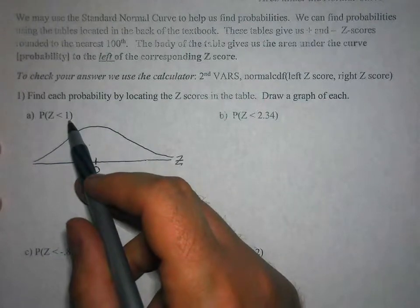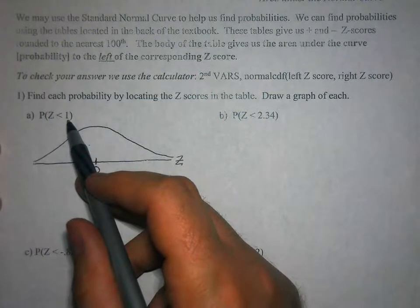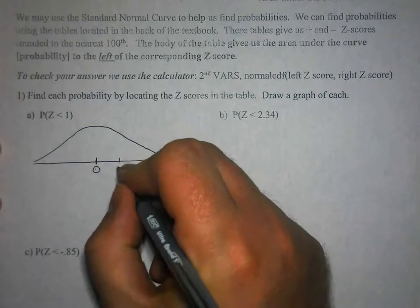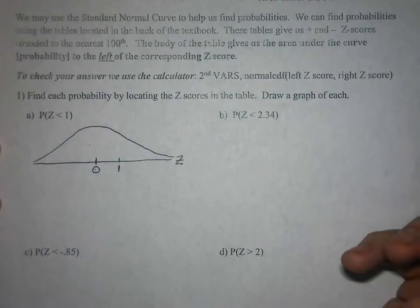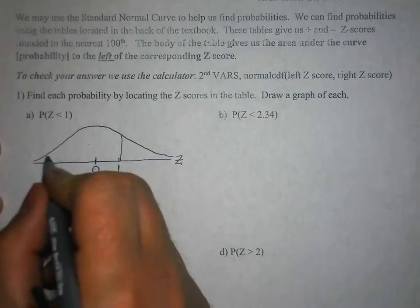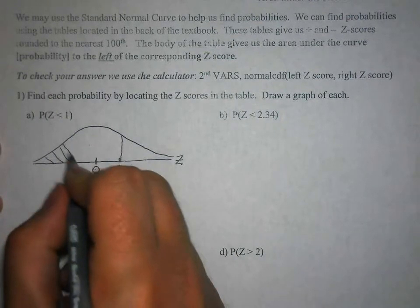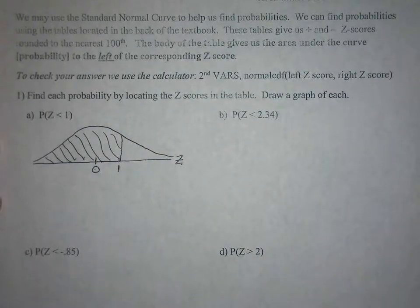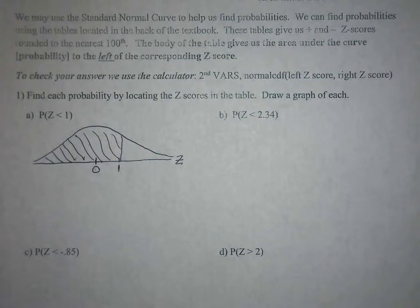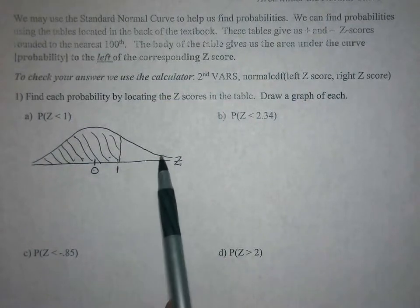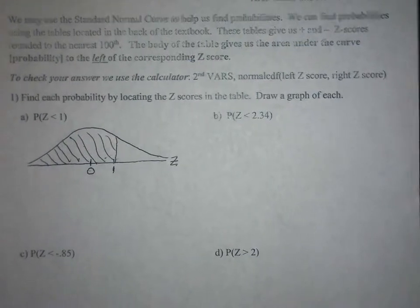Finding the probability that z is less than 1 — we want to know what area, or probability, lies to the left of 1. A z-score of 1 is one standard deviation above the mean. So we shade everything to the left of 1. Remember that 100% of the data is under the entire curve, so the total area is 1, or 100%.